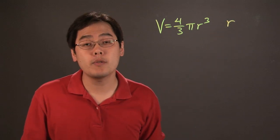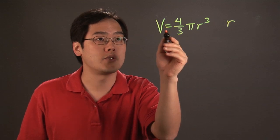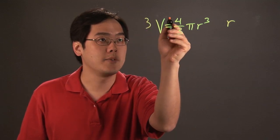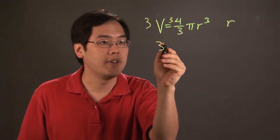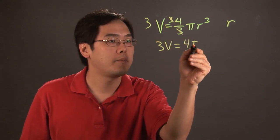Now first and foremost, what you want to think about is getting rid of the fraction. Now first, the denominator is 3, so go ahead and multiply both sides by 3. So you have 3v equal to, the 3's cancel, so you have 4 pi r cubed.